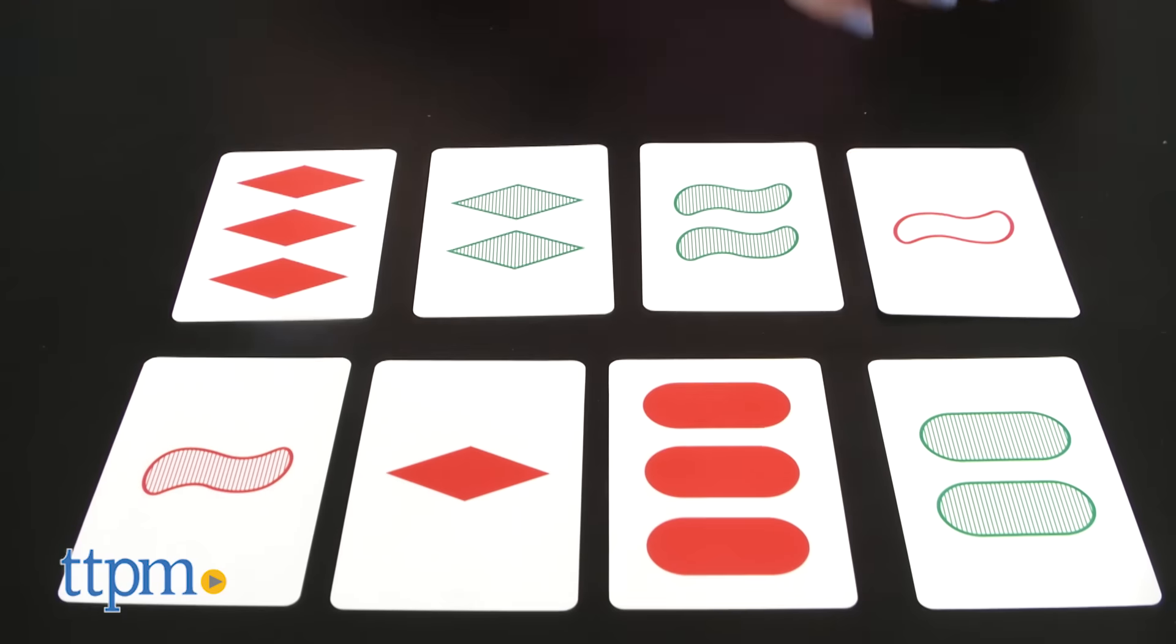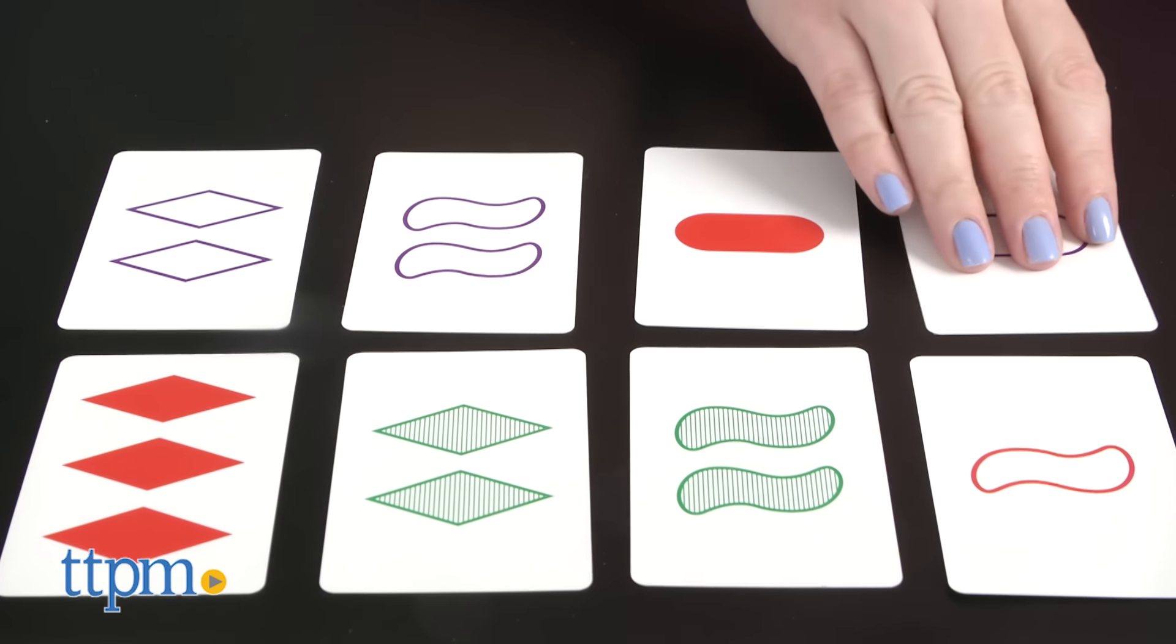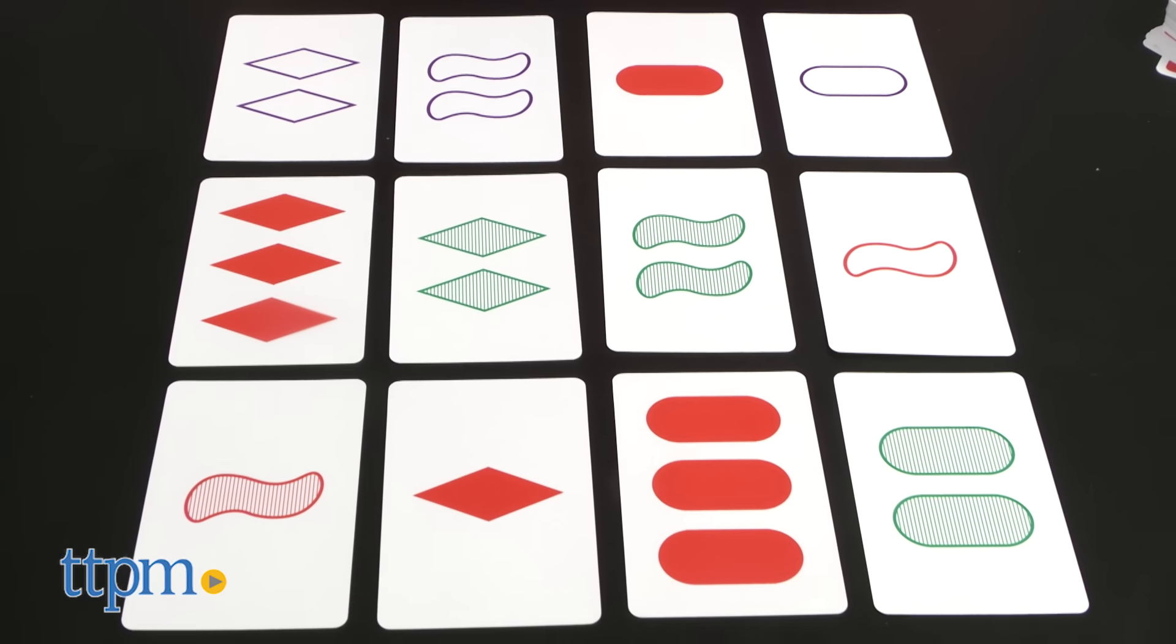To play, lay 12 cards face up in a rectangle. Then all players simultaneously scan the cards for sets. If you find one, call out 'set' and pick up those cards, provided that the set is correct.